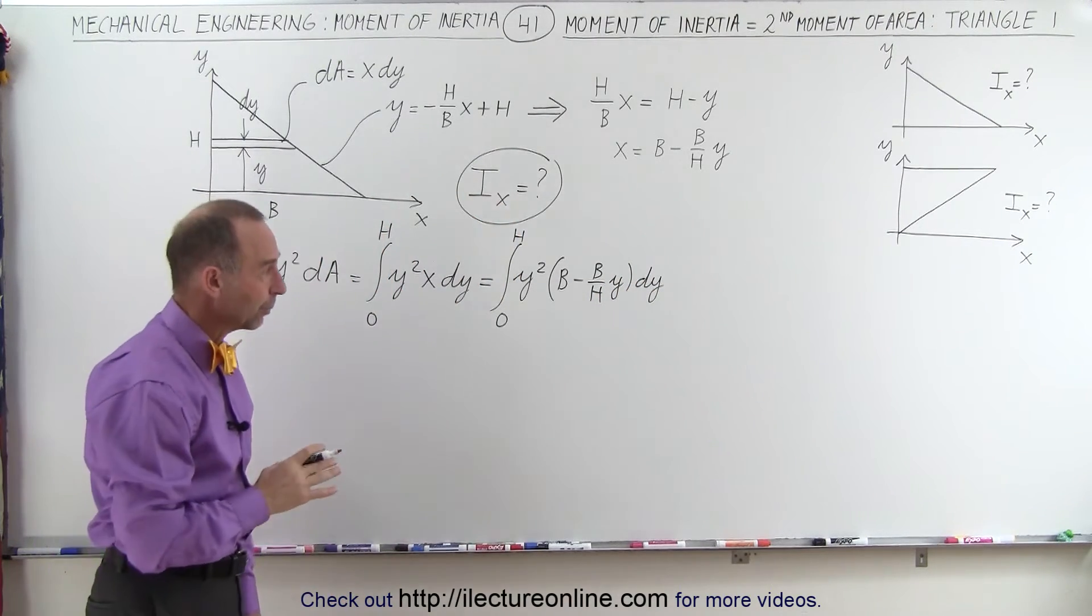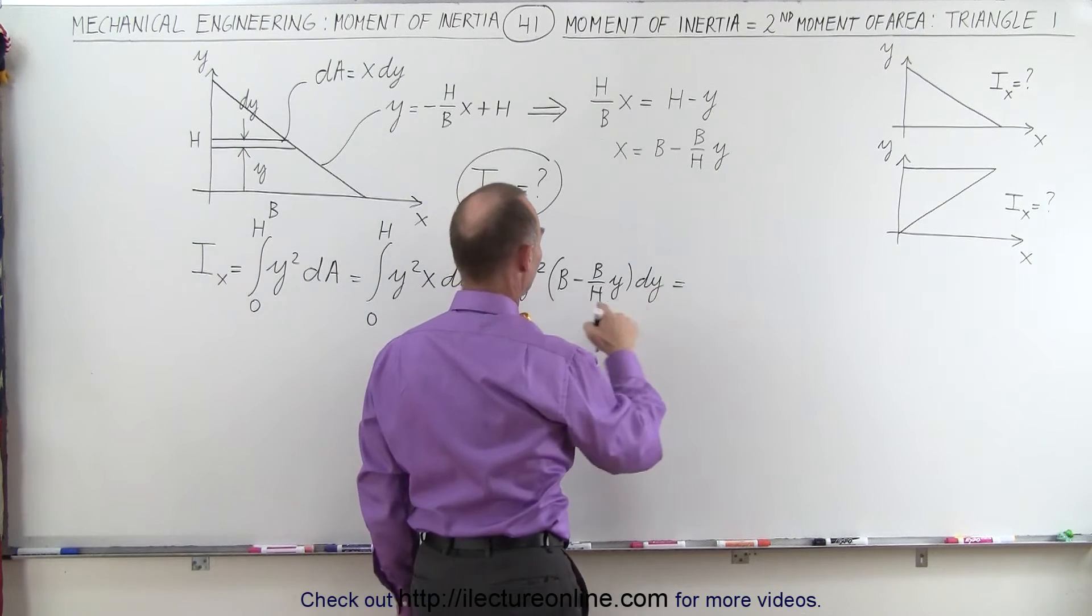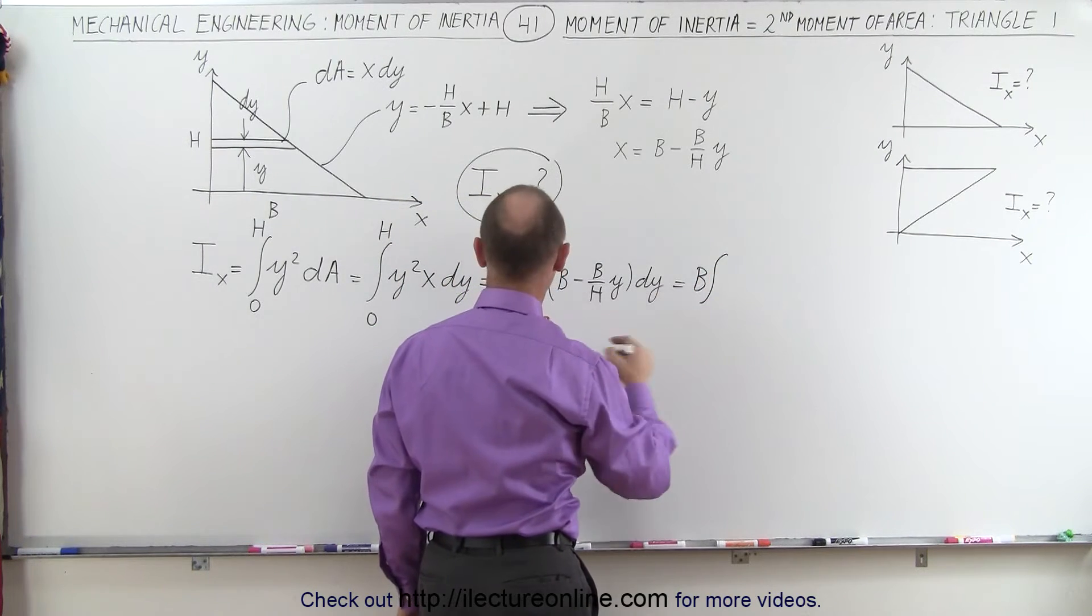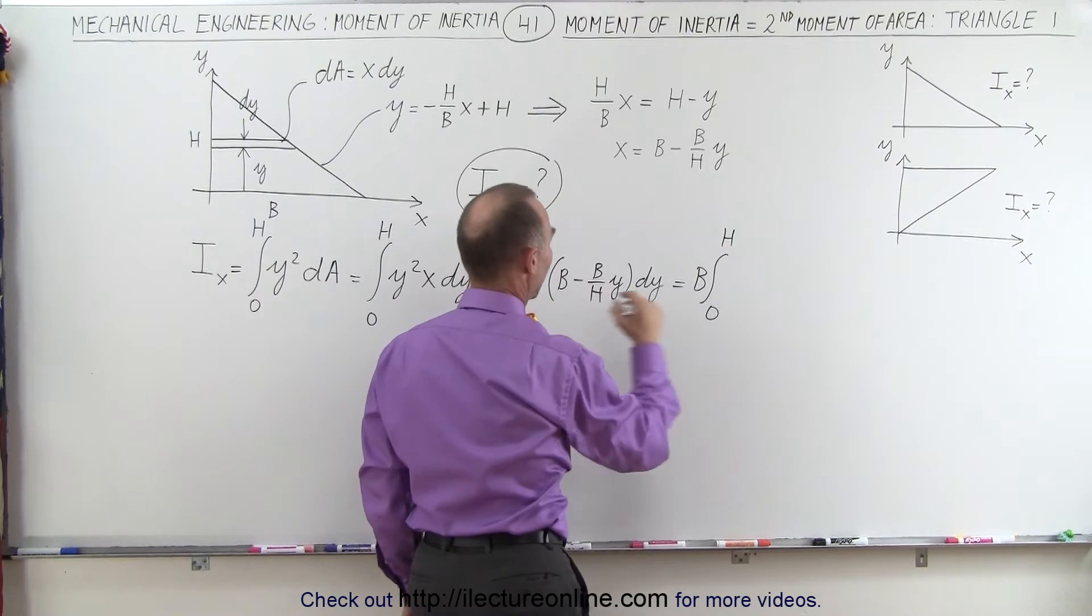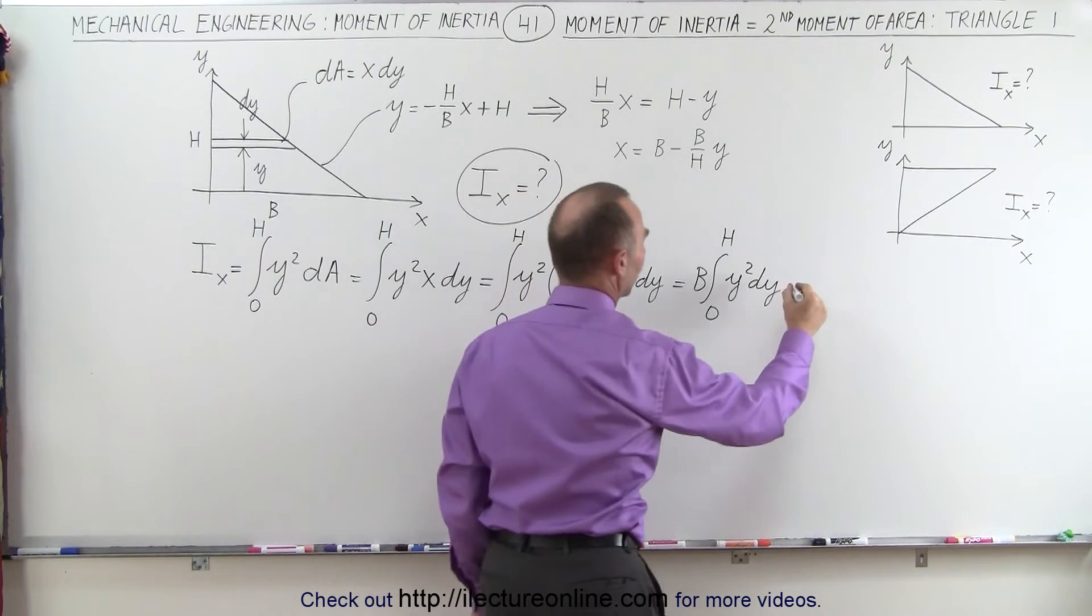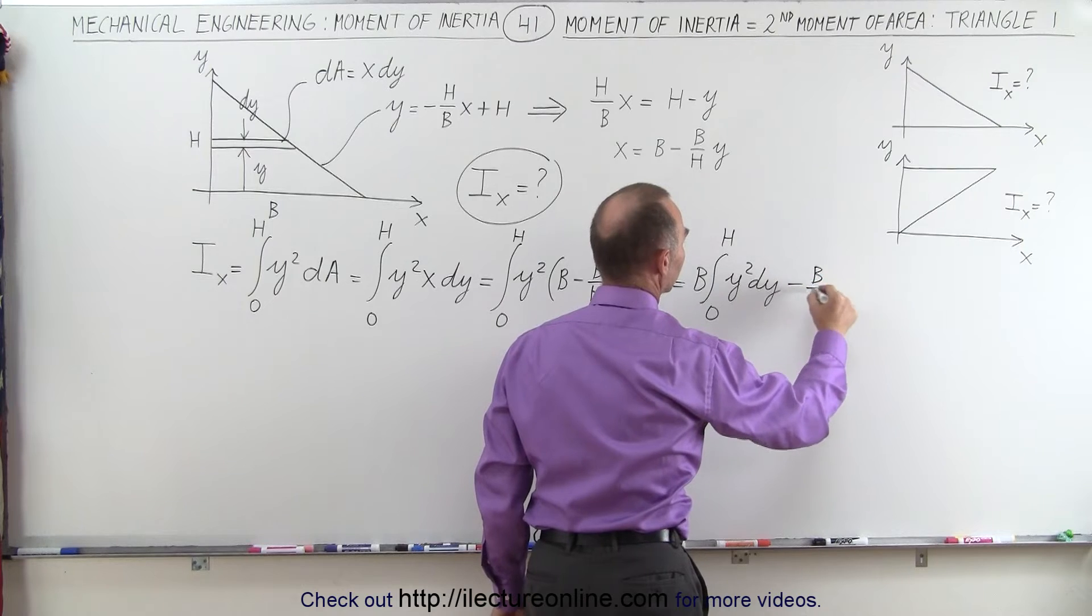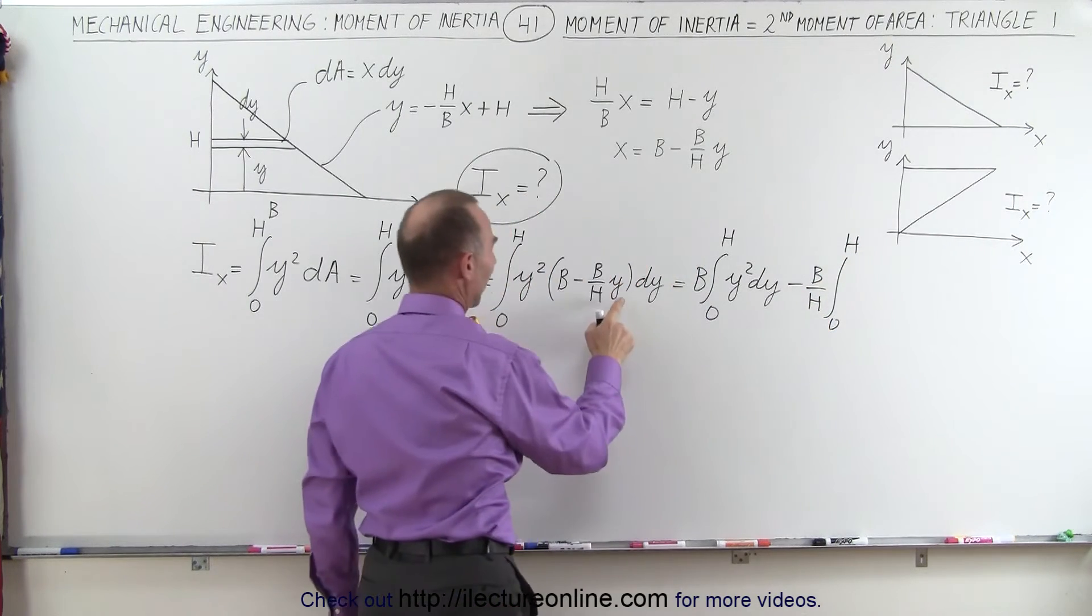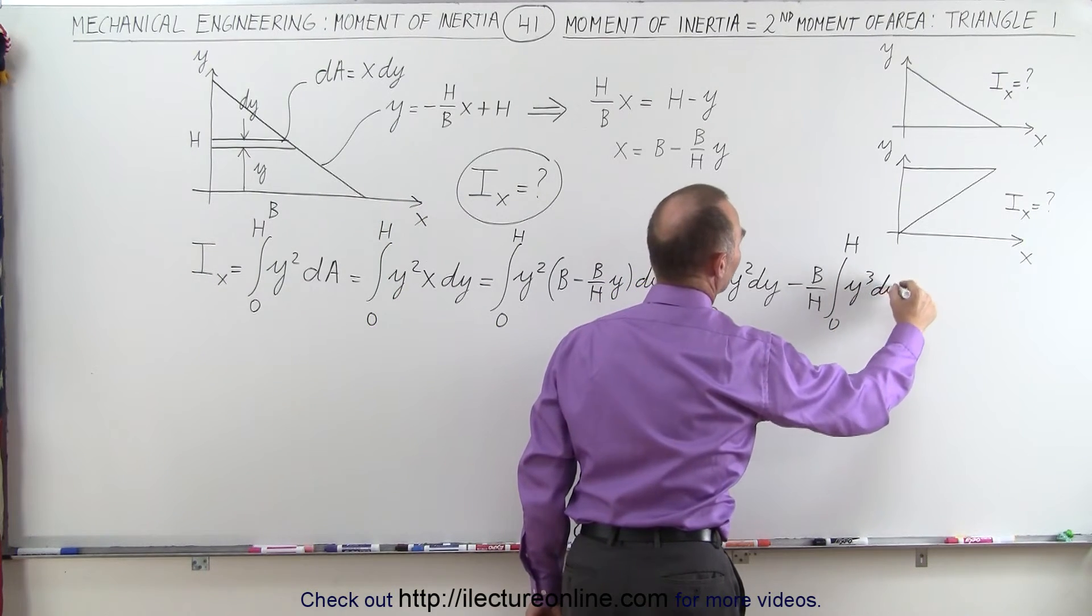And now we realize we're going to end up with two different integrals, so let's separate them. This is equal to the first integral. We'll have the constant b, taking it out of the integral sign. We have 0 to h for the limits, and then we have y squared dy, that's our first integral. We have a minus. The constants are b over h, times the integral also from 0 to h, and now we have a y times a y squared, that's a y cubed, times dy.